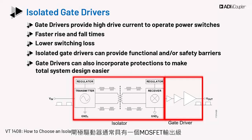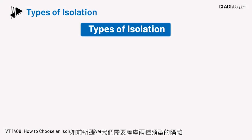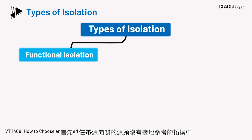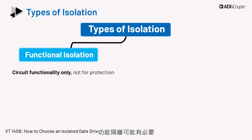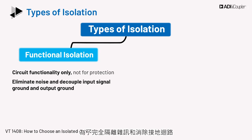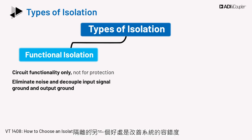The gate driver block would generally have an output MOSFET stage. There are two types of isolation that need to be considered. Firstly, functional isolation may be necessary in topologies where the source of the power switch is not ground referenced. This is the case in a buck converter and other topologies employing a half bridge. Separate grounds are necessary to completely isolate noise and remove ground loops. The other advantage with isolation is improvement in fault tolerance of the system.